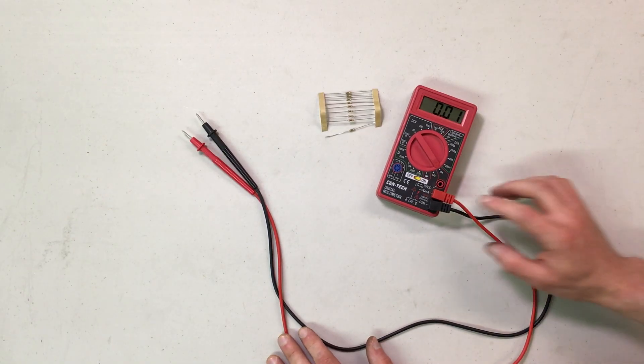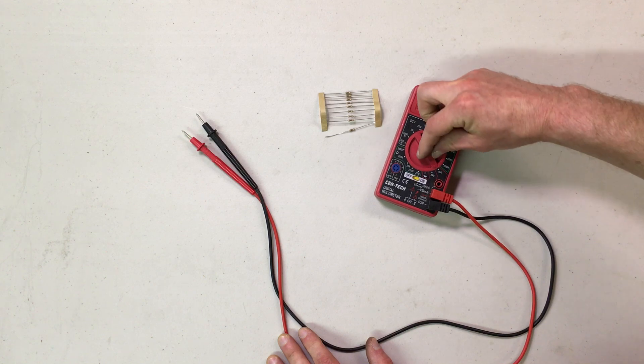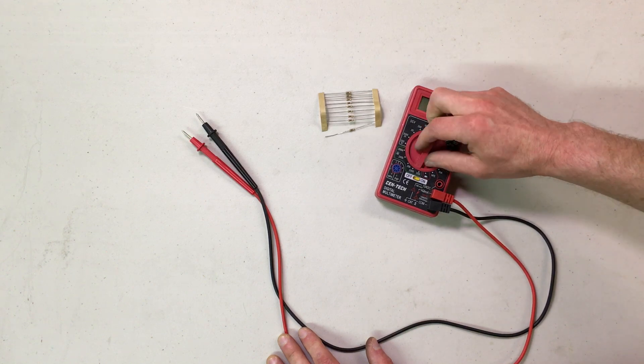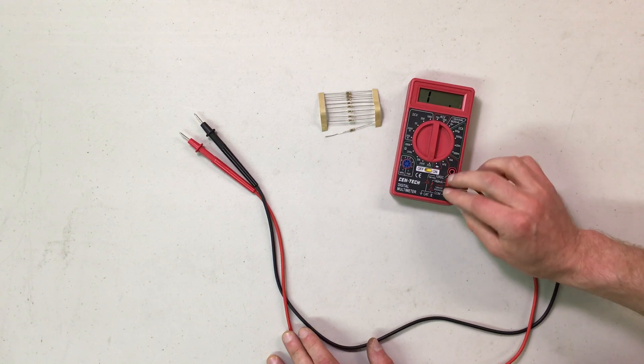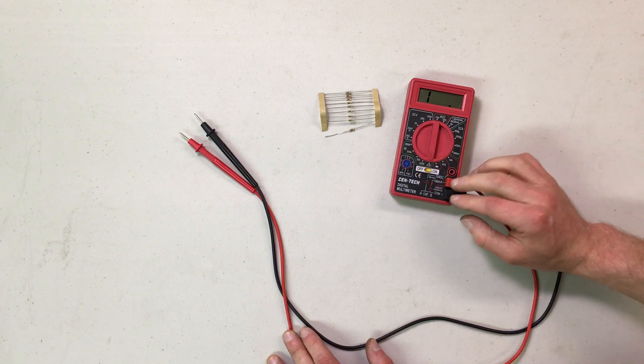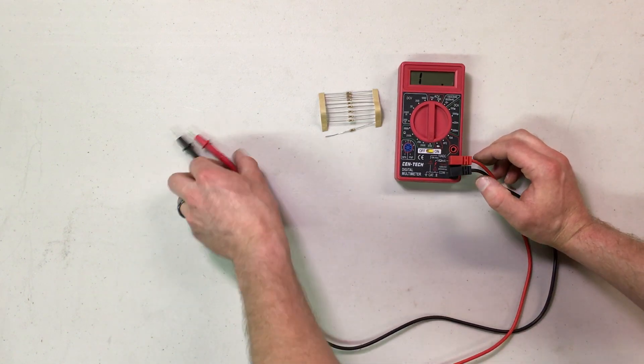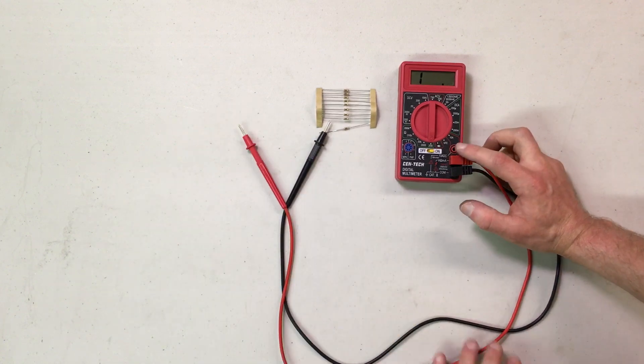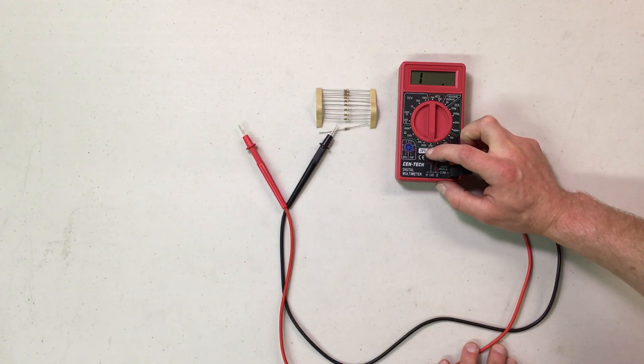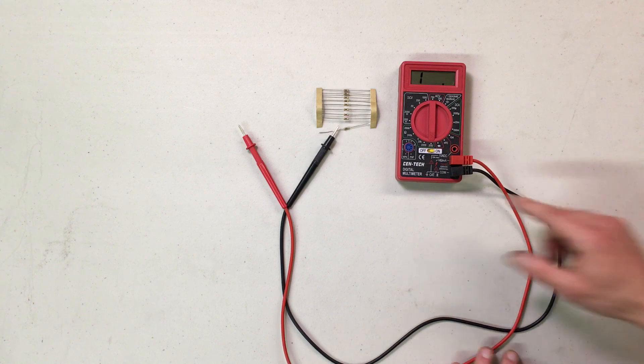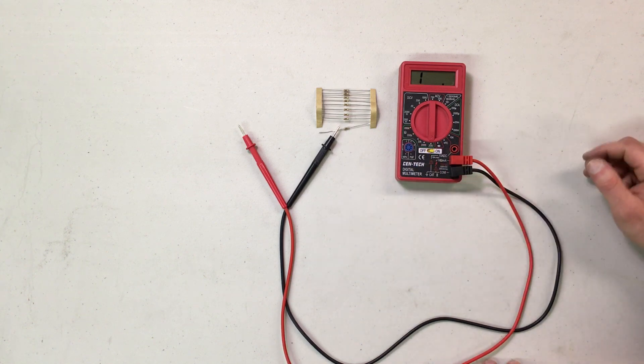For measuring resistance with a digital voltmeter, you will set the dial to the ohms, the resistance range. The ohm symbol signifies that. For general purpose use, you will usually start with the 200 scale setting and then work your way up as needed.